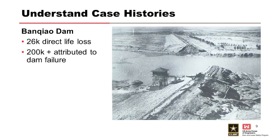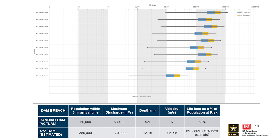Worst Dam Failure in History: Banqiao Dam, China, 1975. Caused by overtopping — both direct and indirect life loss. This is an example bar graph showing the dam breach and population, max discharge, depth, velocity, and life loss as a percentage of population at risk.